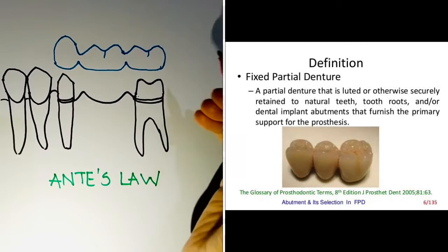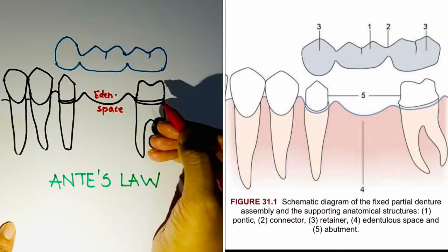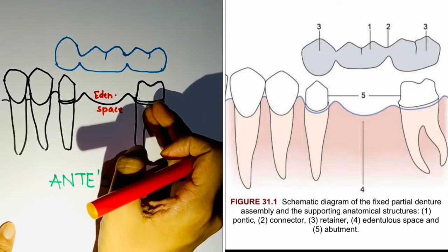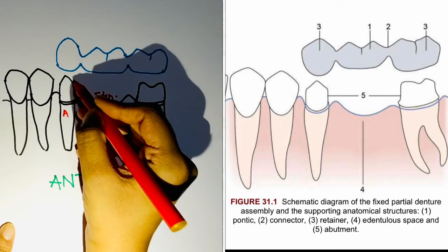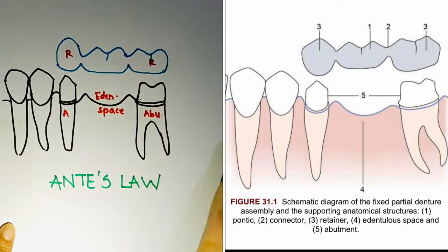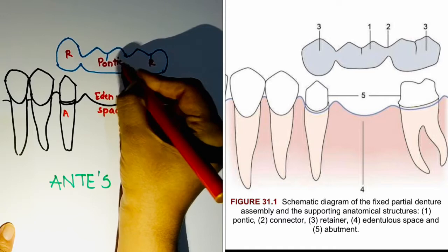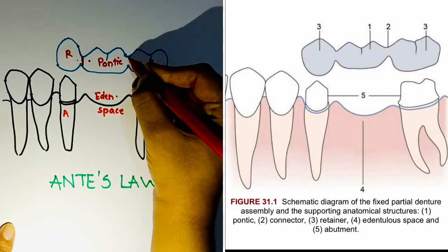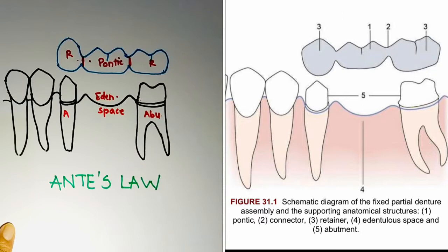Now, this is the diagram I have drawn. Over here, this is your edentulous space and these are your abutments — abutments are the teeth present adjacent to your edentulous space. In a fixed partial denture, we do tooth preparation so that the retainer can sit onto the abutment tooth for support. The portion which sits on your abutment is the retainer, the artificial tooth replacing the edentulous space is the pontic, and the part connecting the pontic and retainer is the connector.